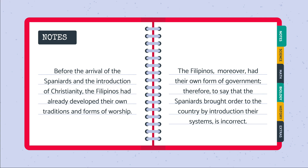Before the arrival of the Spaniards and the introduction of Christianity, the Filipinos had already developed their own traditions and form of worship. The Filipinos, moreover, had their own form of government. Therefore, to say that the Spaniards brought order to the country by introducing their systems is incorrect.